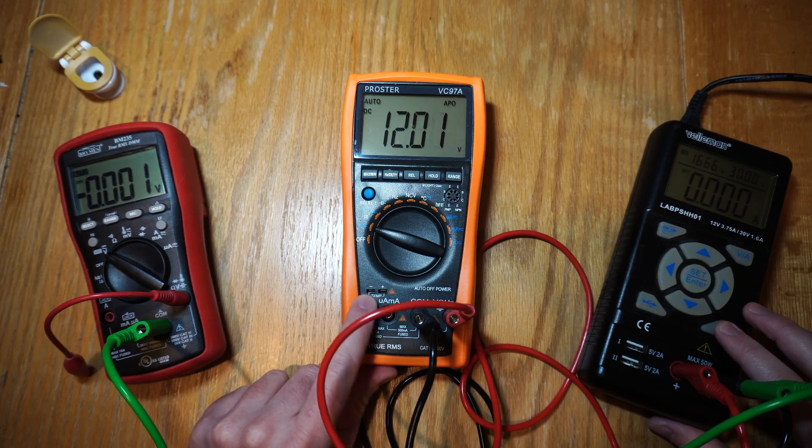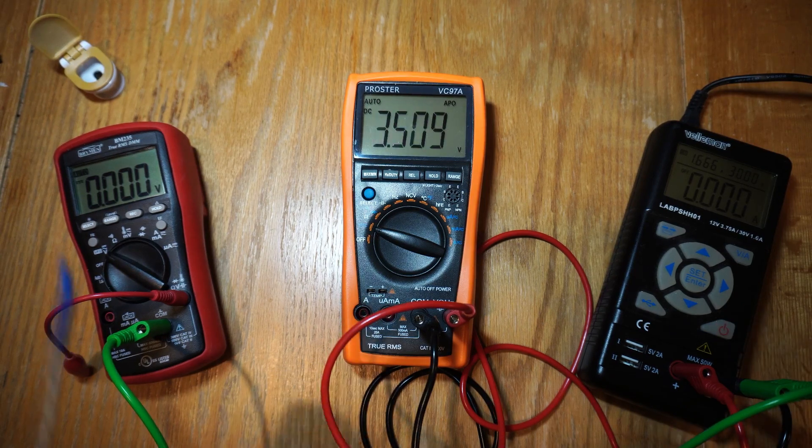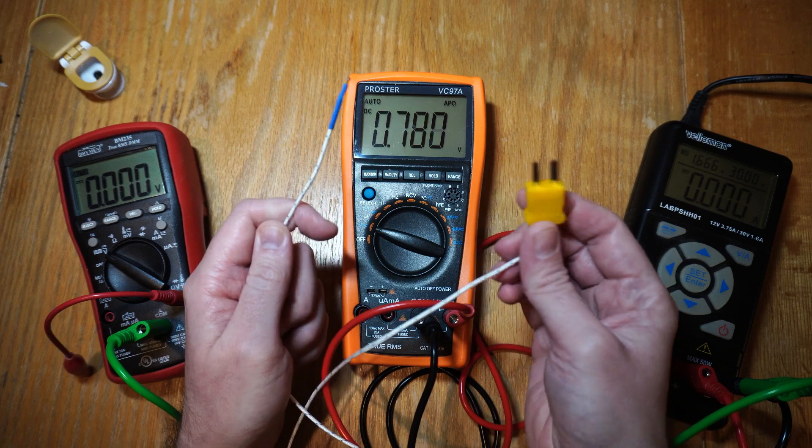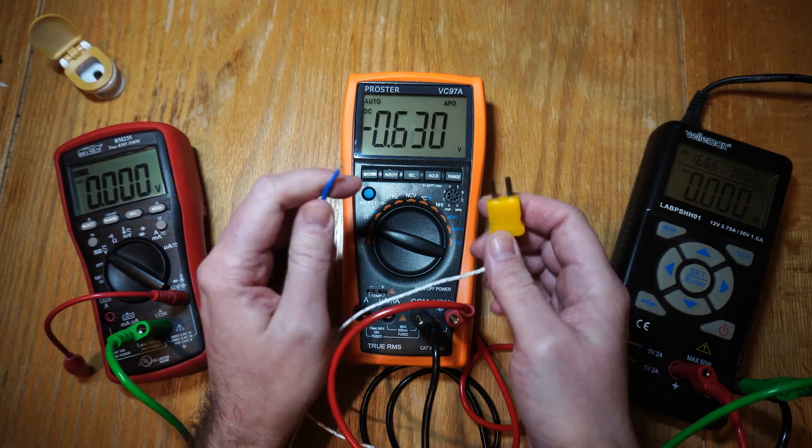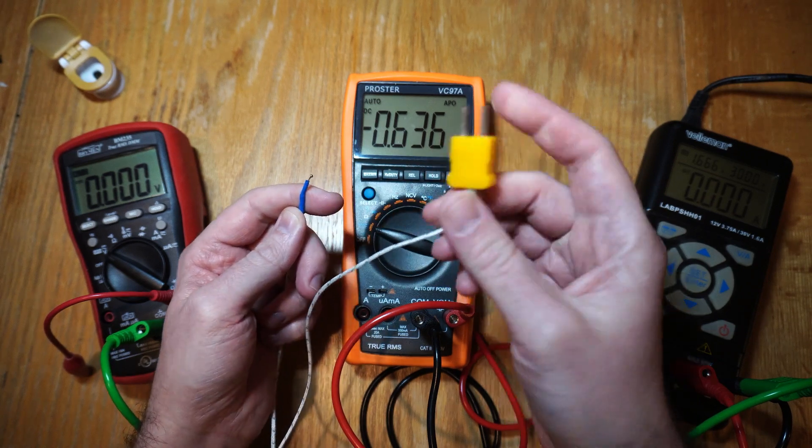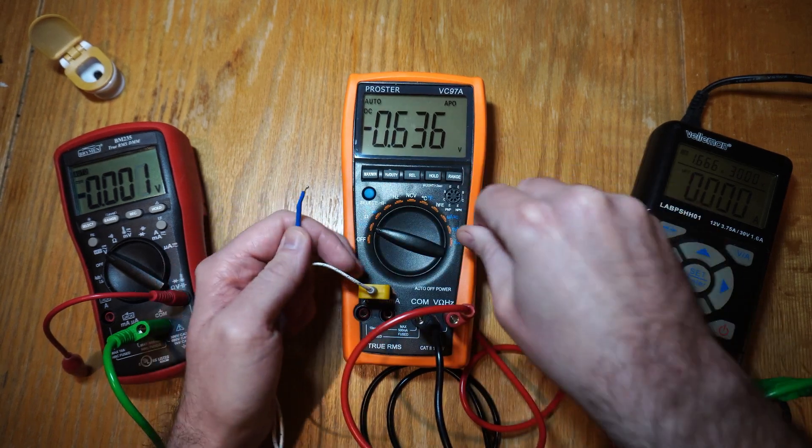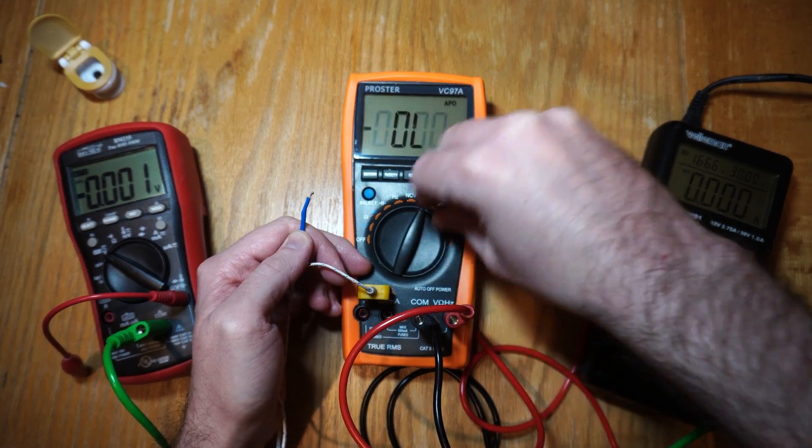Now the temperature probe goes into this dedicated K-type socket here. Now a K-type thermocouple, this device here, it's got the plug on one end and then the actual probe on the end there is just exposed wire. It's electrically connected there. It's exposed. So I'll put that probe into there and we'll turn it around to the temperature range.